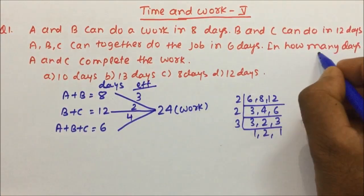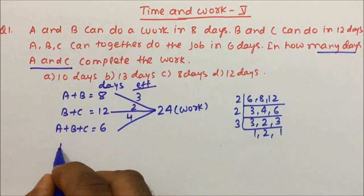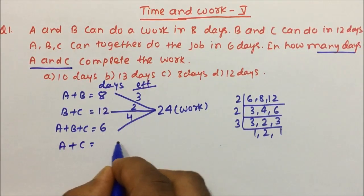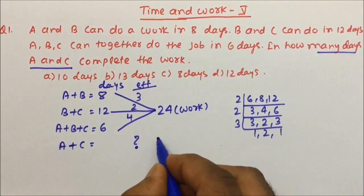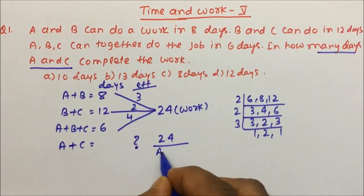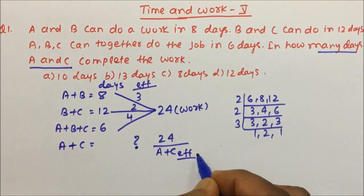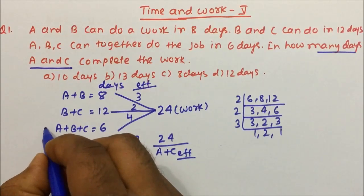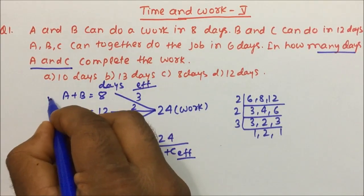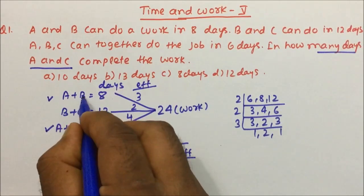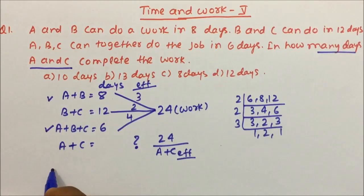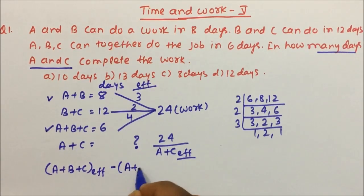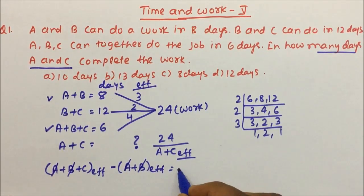To find in how many days A and C will complete the work, we need the efficiency of A plus C. Total work is 24, and once we know A+C efficiency we divide to get the answer. To find C's efficiency: (A+B+C) efficiency minus (A+B) efficiency — the A and B cancel — giving C's efficiency as 4 − 3 = 1.